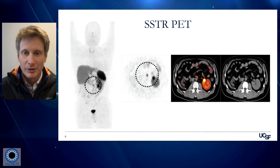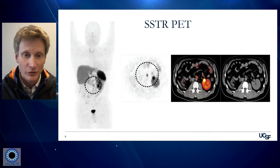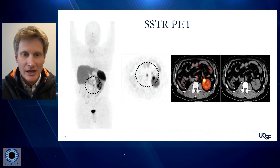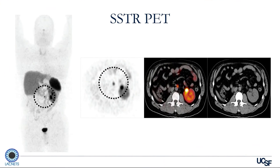In terms of SSTR PET, these are the images — it works really well. On the left is something we call a MIP or maximum intensity projection image. You can see the patient's head at the top, arms are up. The black circle is surrounding a nodal metastasis near some surgical clips on the axial images, showing recurrent somatostatin receptor positive neuroendocrine tumor nodal disease. Without somatostatin receptor PET, you'd have no way to localize this disease — on CT, a three to four millimeter node would be very nonspecific. But now you know where the disease is, and you can follow that node using CT scans over time to see if it grows.